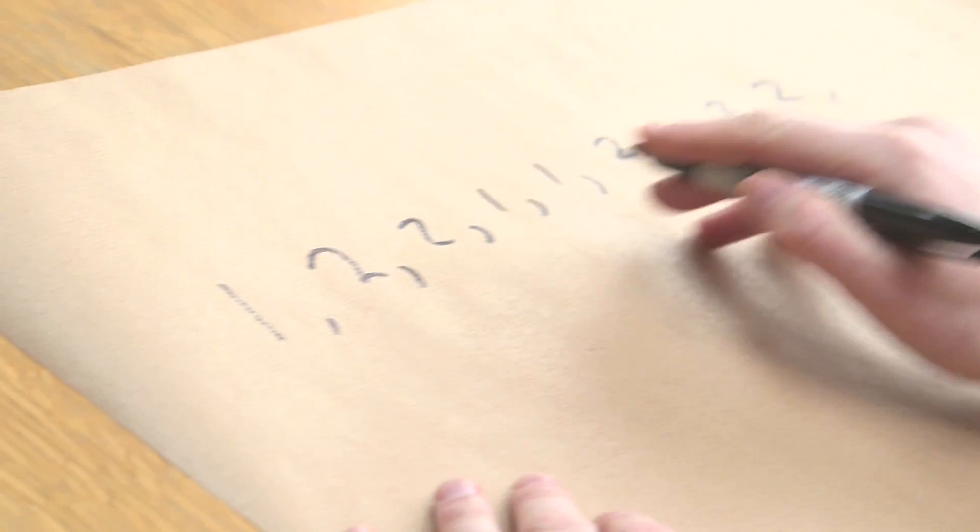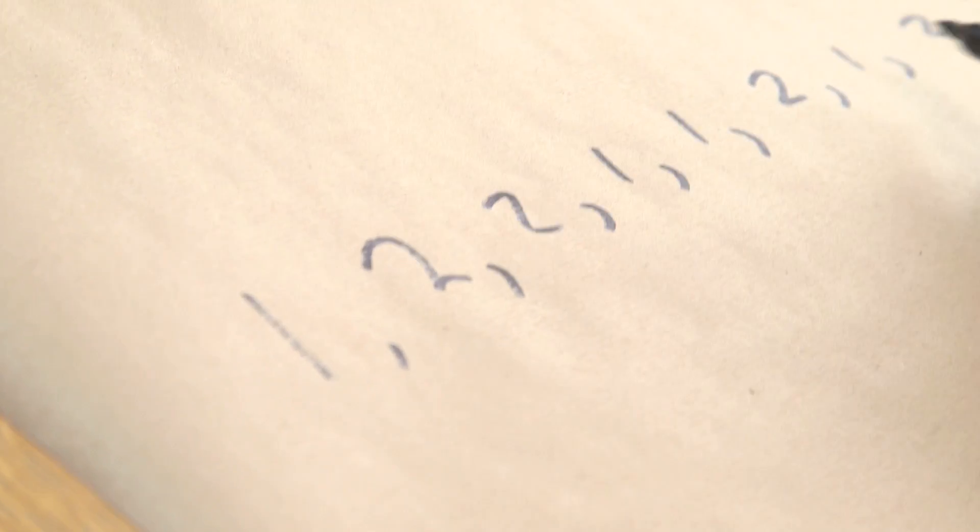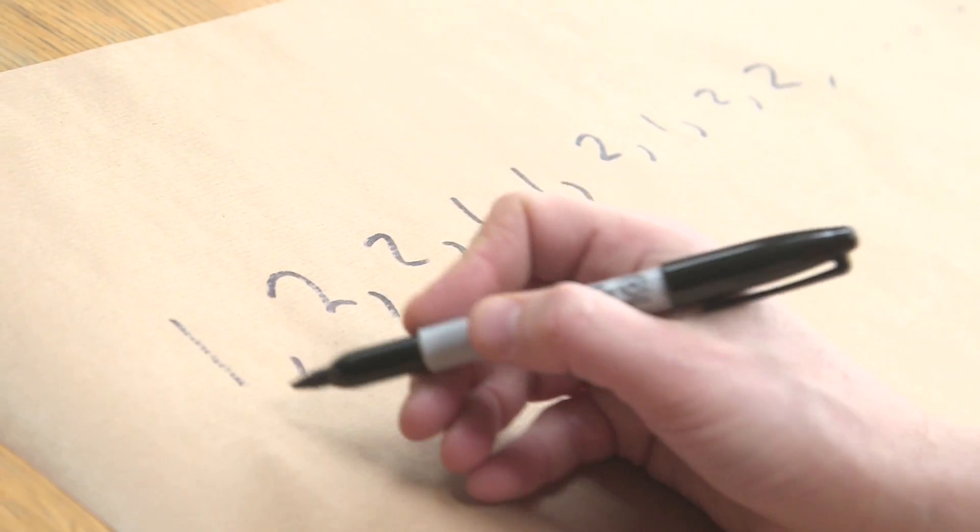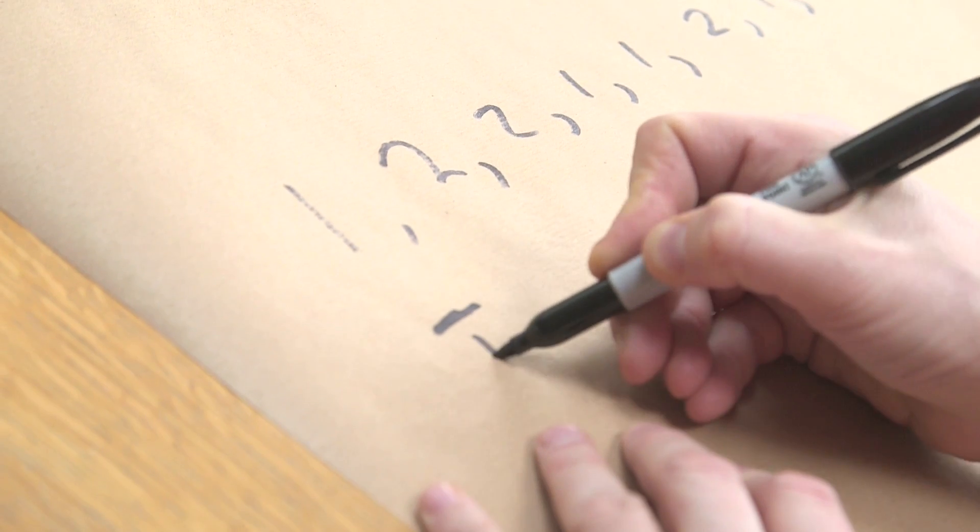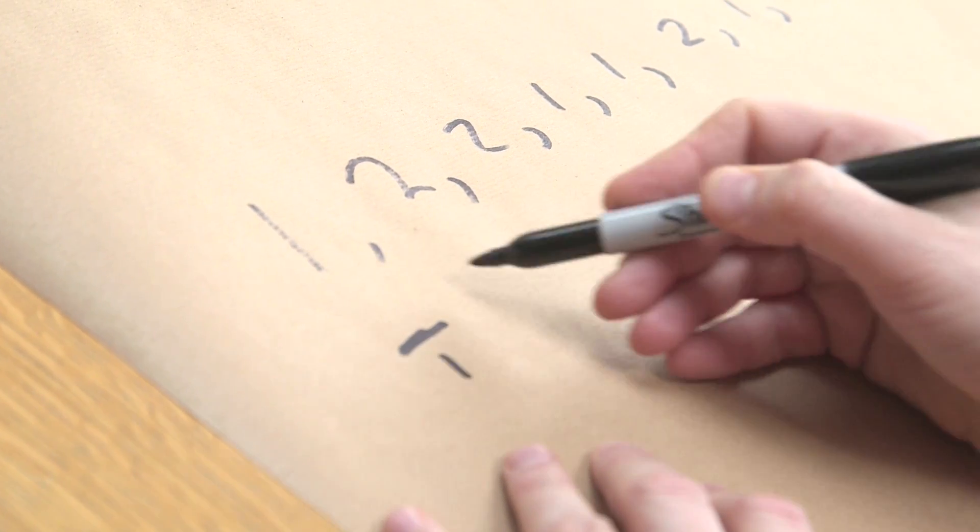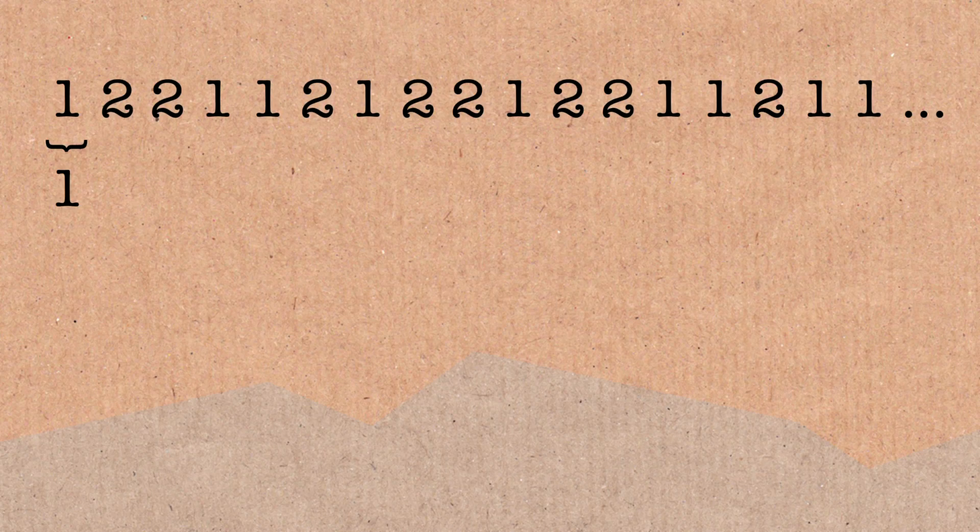But let's look at the runs because the numbers either come in runs of one or two, interestingly. So this is a run of one because it's just one, one, two, like a one. Here's a run of two because there are two of them.